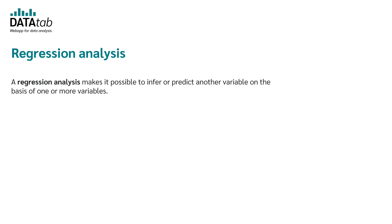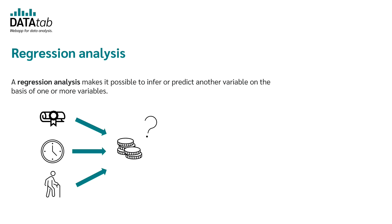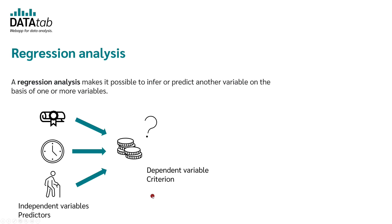A regression analysis allows you to predict a variable based on one or more variables. One question you can answer with a regression analysis is what influences a person's salary. In order to do this, you could take the highest educational level, the weekly working hours, and the age of the person. The variable you want to predict is called the dependent variable or criterion. The variables you use to predict the salary are called independent variables or predictors.